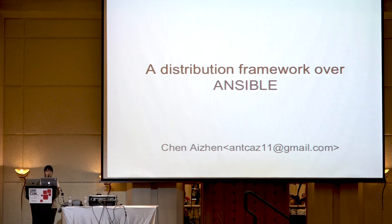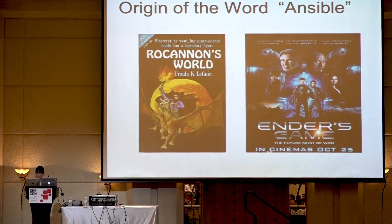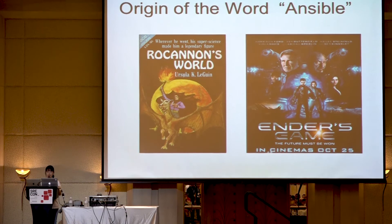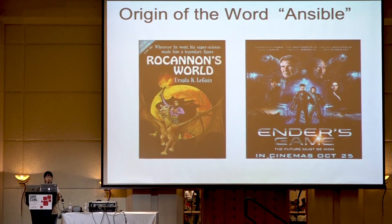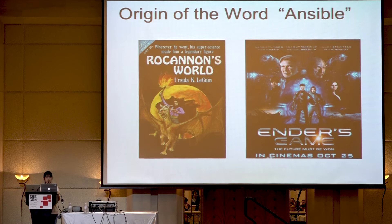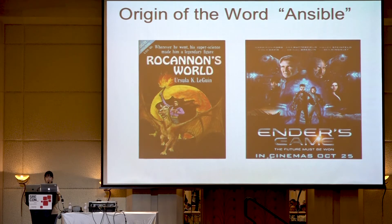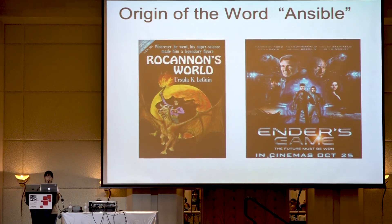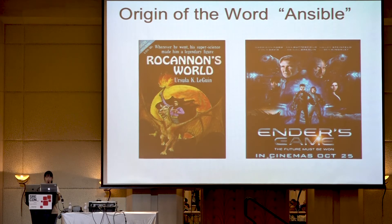I hope my talk can bring you some new ideas. So let's get started. I have a brief introduction of Ansible, but Ansible is not the main story today. Ansible is a faster-than-light communicator, coined in the novel Rocannon's World in 1966, and is widely used in science fiction. The famous one is Ender's Game. Ansible is a fictional hyperspace communication system where no matter how far it is, it can be sent immediately. I have seen this movie. It's very great.